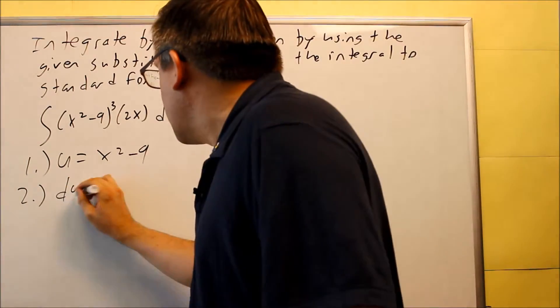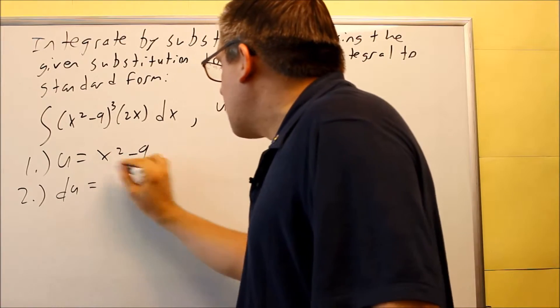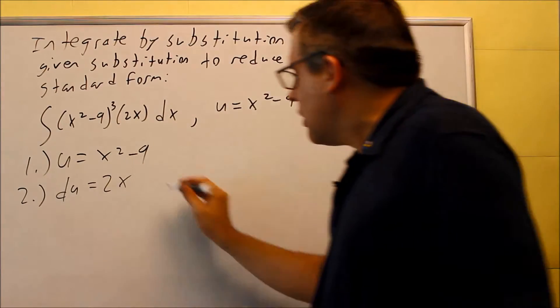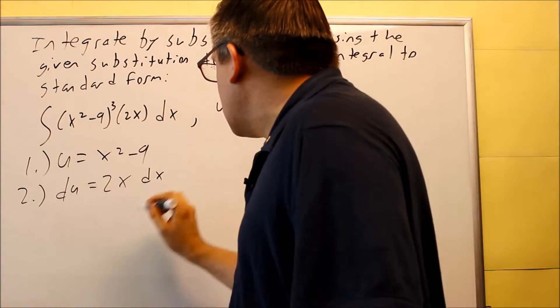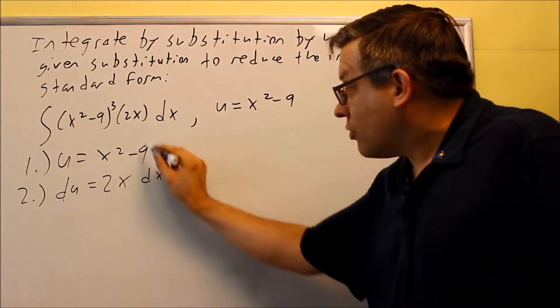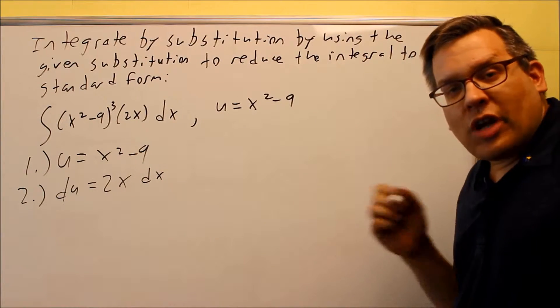The second step is we've got to take the derivative of both sides. The left-hand side turns into du. This part, if we take the derivative, we're going to get 2x and then we're going to put the dx on the end here. That's what you always will have after this derivative.